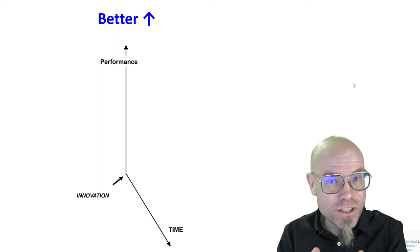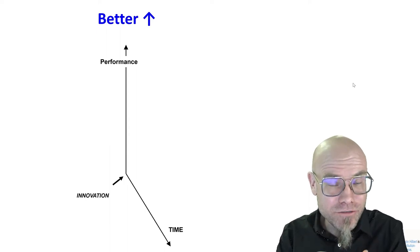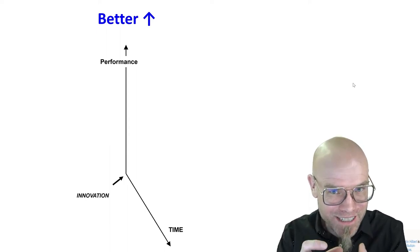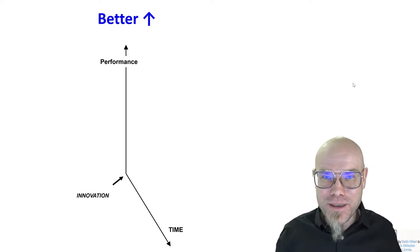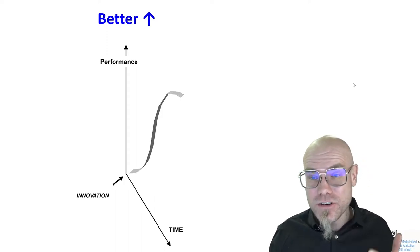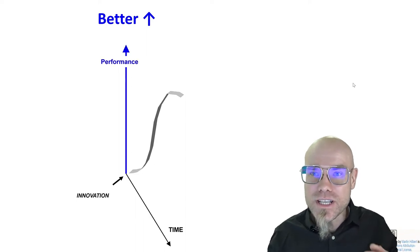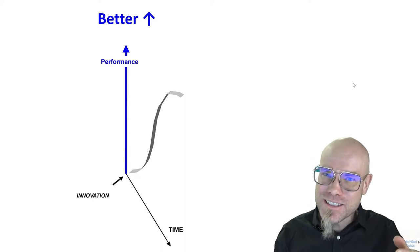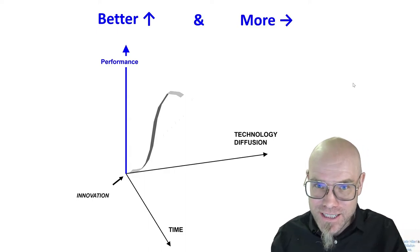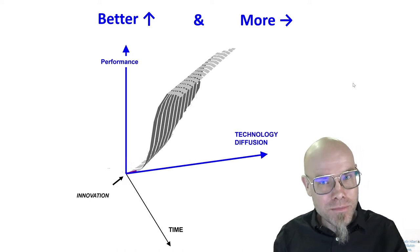Technology is the knowledge that we have — what we understand about the universe around us — which we then embed into physical structures in order to capture this knowledge and diffuse it. Once we capture this knowledge, and we looked at this in a previous lecture when we talked about technological change — how technology gets better over time — we also said that it will diffuse in society, and that leads to social change. These are two complementary processes.